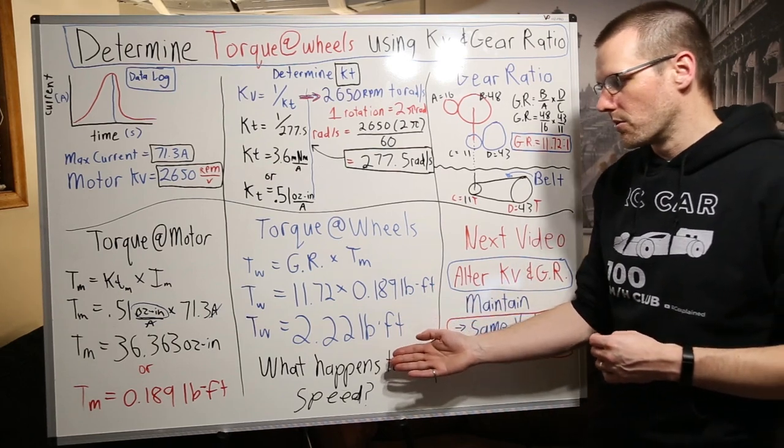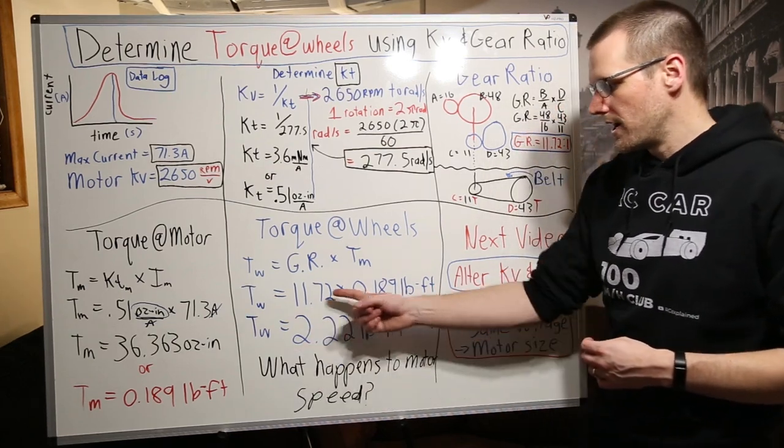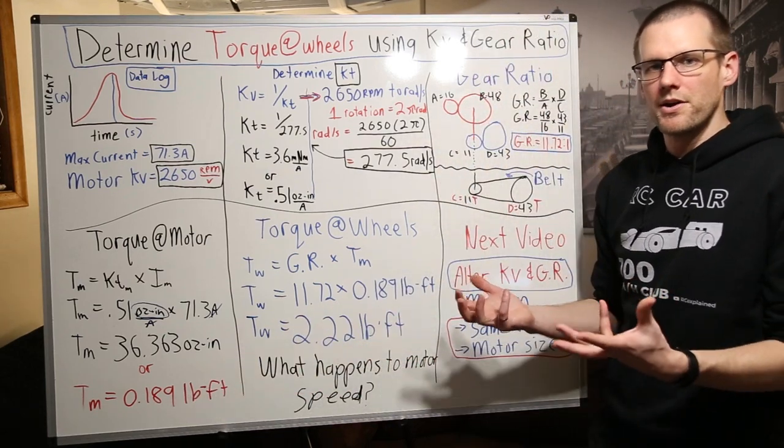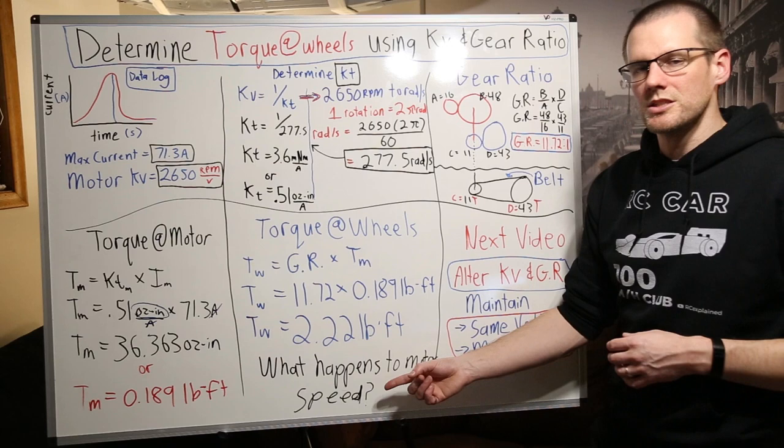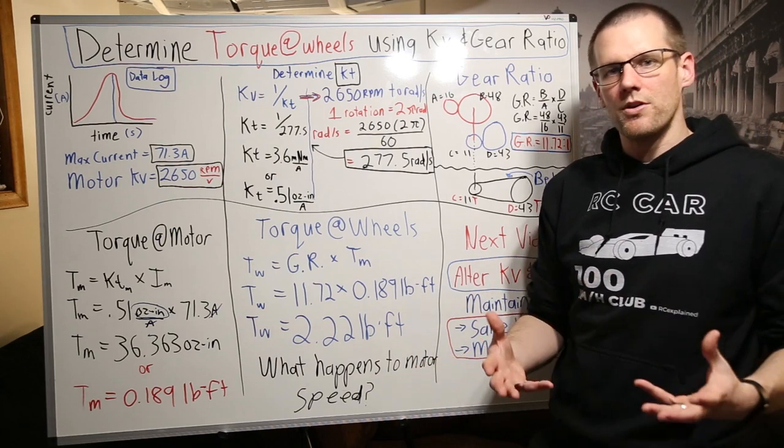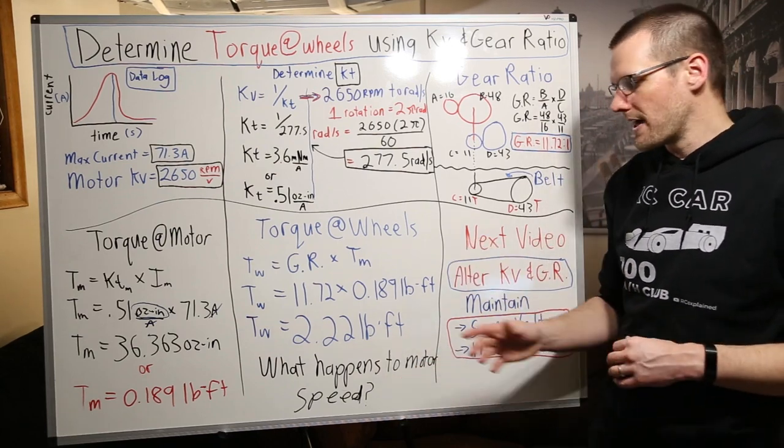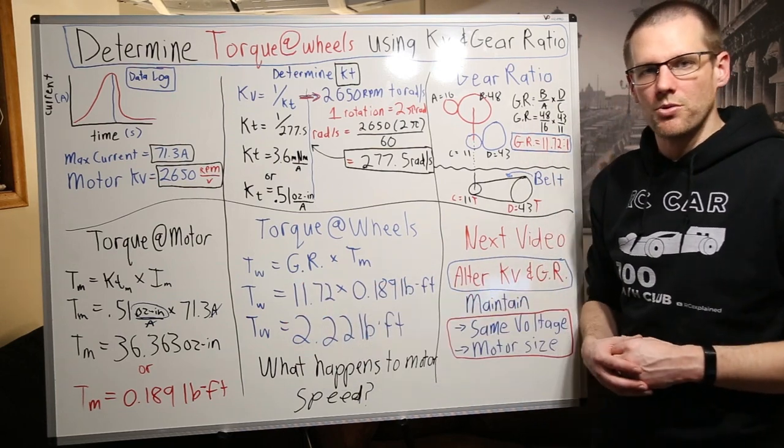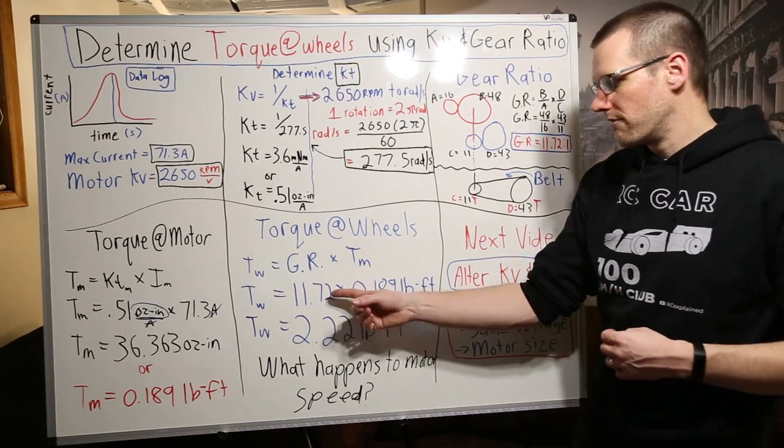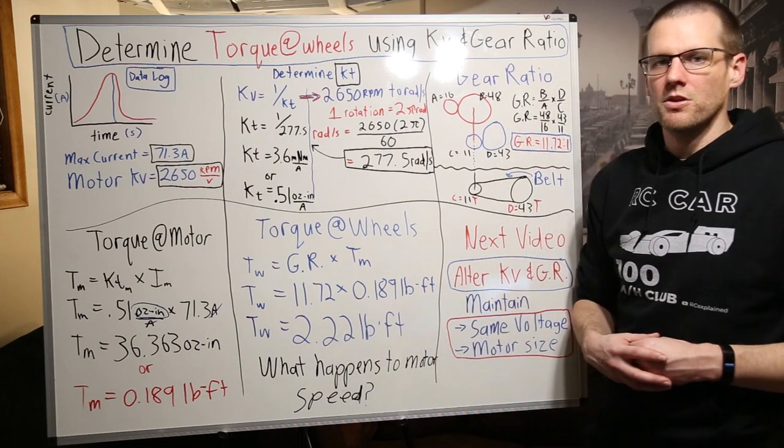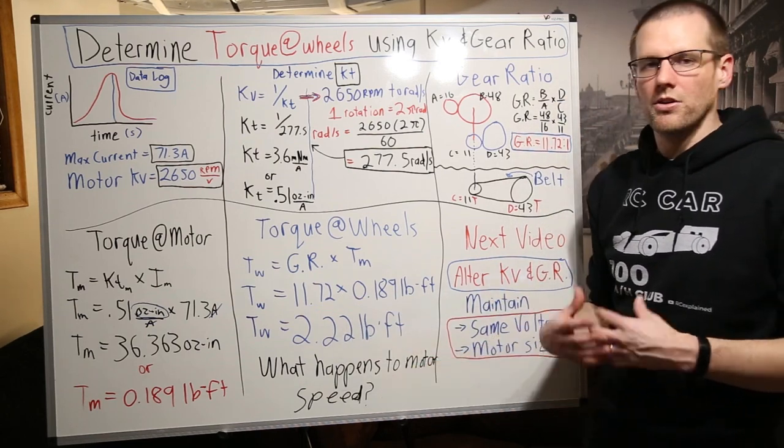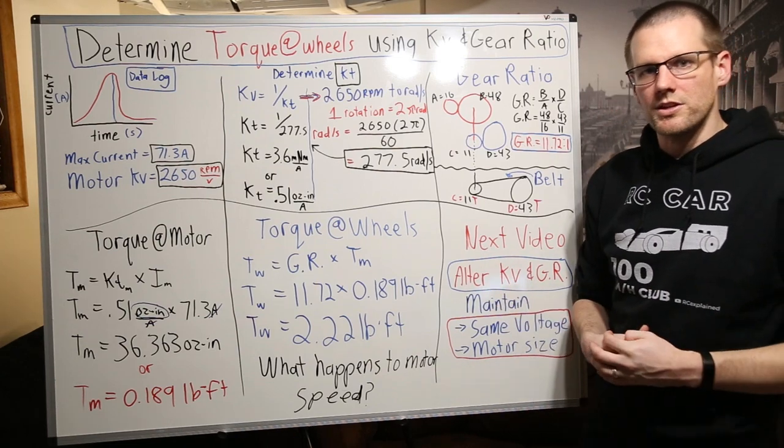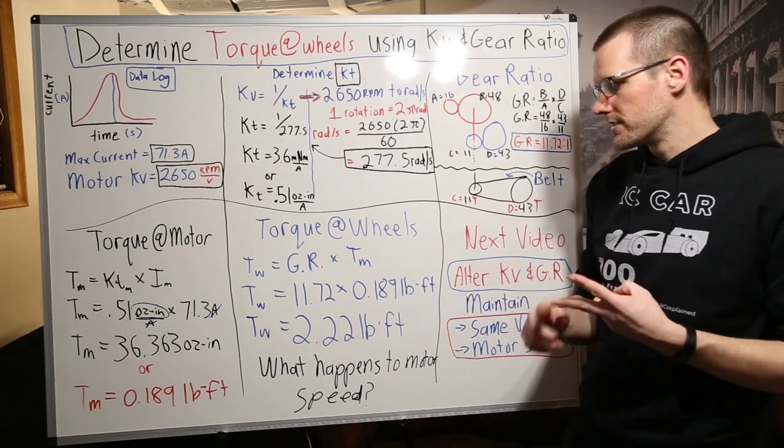Here we're actually multiplying torque. Our torque value went and increased. It went from 0.189 to 2.2. So we got better amounts of torque out of it. That means that the speed that we get out of that motor at the wheels is reduced by that same proportion. We'd actually take the RPM that the motor is producing. We would divide that by 11.72 and we would get the output speed or RPM that we would expect out of the wheels. That's what's happening with the gear ratio in terms of your torque as well as the speed.